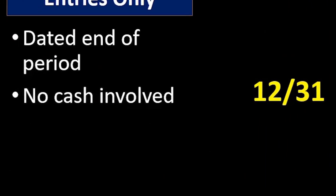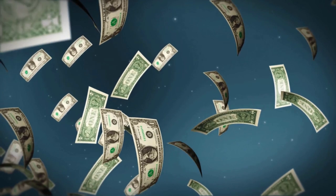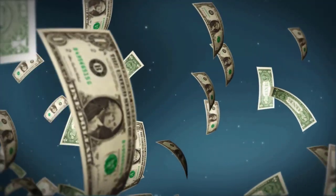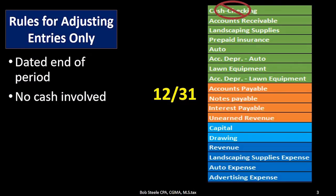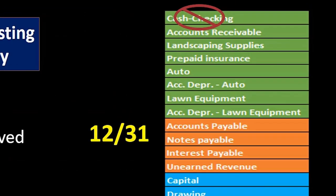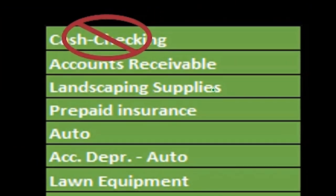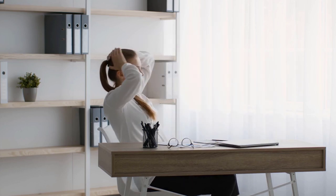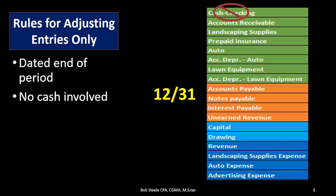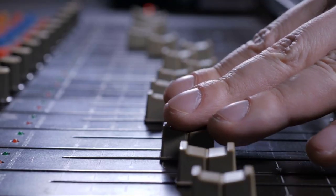We have no cash involved when we are making adjusting journal entries. This is important because cash is involved in just about every or many transactions for the normal journal entry process, and it's one of the first accounts we typically think of when trying to construct a normal journal entry. Cash is going to be done — the bank account will generally be reconciled before the adjusting process. No change to cash within the adjusting process.